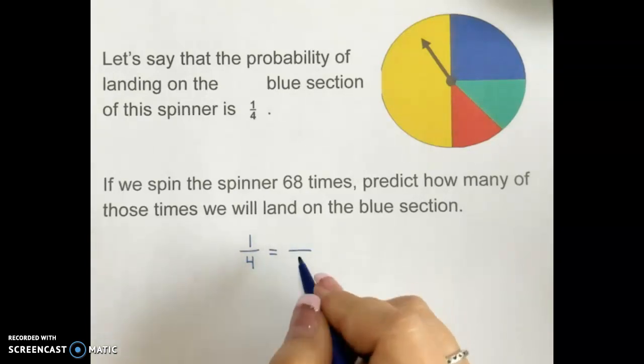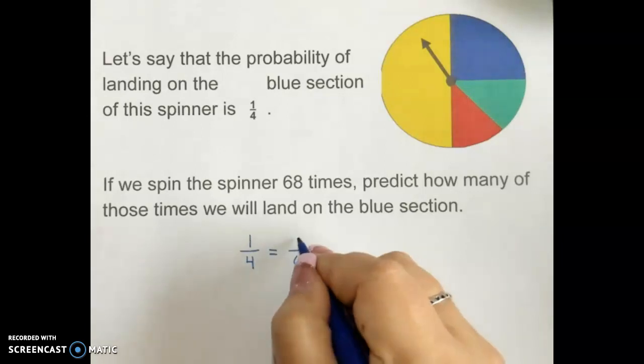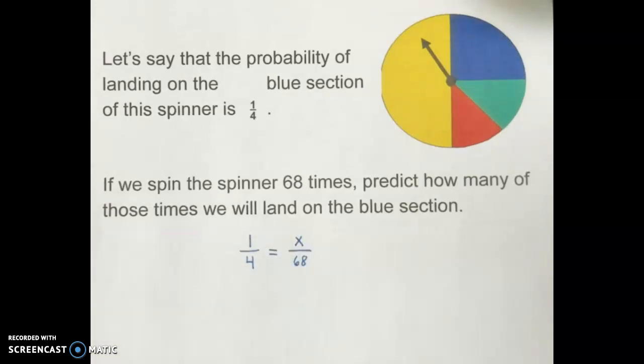Then if we spin the spinner 68 times, that means we are doing 68 trials, and we're trying to figure out how many of those 68 are going to land on the blue section. So here's the proportion I can set up.